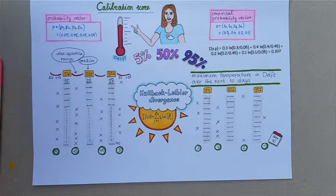For our example, I(S, P) equals 0.3 times the logarithm of 0.3 over 0.05, plus 0.4 times the logarithm of 0.4 divided by 0.45, plus 0.2 times the logarithm of 0.2 divided by 0.45, plus 0.1 times the logarithm of 0.1 divided by 0.05, which is 0.397.